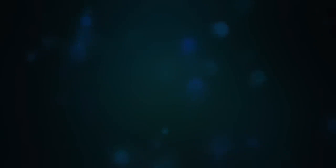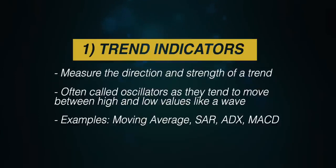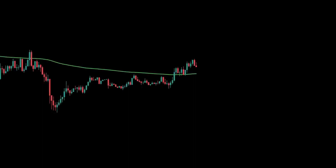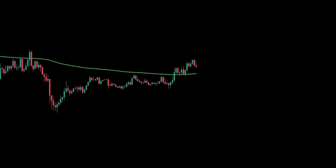Technical indicators can also be divided into four groups. The first group is trend-following indicators. These measure the direction and strength of a trend by comparing prices to an established baseline. They include moving averages, which are used to identify trends and reversals as well as to set up support and resistance levels.